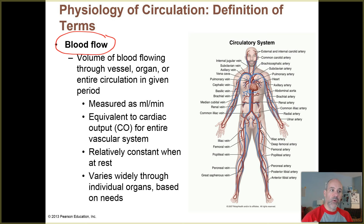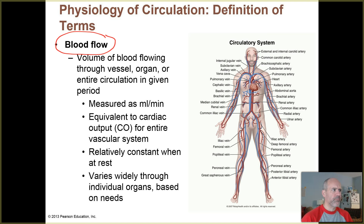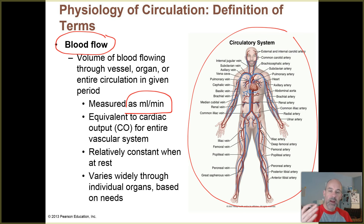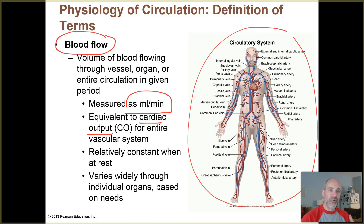If blood flow decreases too much, then a particular organ or body location is not going to receive enough oxygen and nutrients. That can lead to hypoxia, that can lead to tissue death, it can lead to an infarction — where you have tissue death due to a lack of oxygen being received by a tissue. Blood flow is given in milliliters of blood passing to that location within a given minute. For the entire cardiovascular system, the blood flow is going to be equivalent to your cardiac output, because cardiac output is given in milliliters per minute.